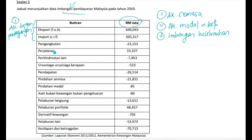Seterusnya kita ada pengangkutan, perjalanan, perkhidmatan lain, serta urusan kerajaan. Untuk maklumat pelajar, keempat-empat komponen ini terletak di bawah akaun perkhidmatan. Ingat, akaun perkhidmatan hanya ada 4 item ini sahaja.